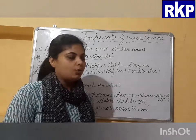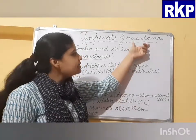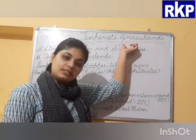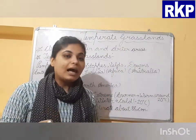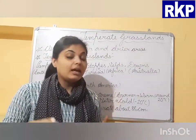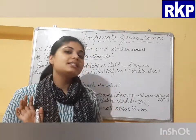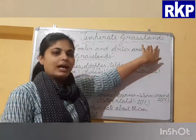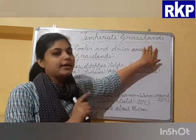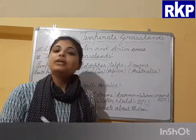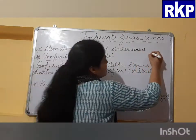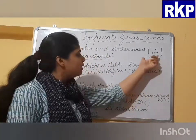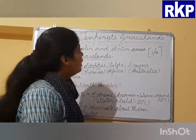The temperate zone lies between the Tropic of Capricorn and the Antarctic Circle in the south. Now, what are grasslands? As the name suggests, grasslands are lands covered by grasses with no or very few trees. Compared to the desert, grasslands receive higher rainfall, but are drier than forests. Grassland covers one-fourth of the earth's surface.